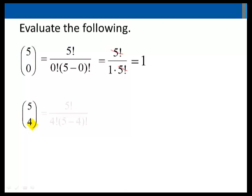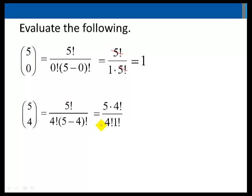5 choose 4 equals 5 factorial over 4 factorial times 5 minus 4 factorial. 5 factorial is 5 times 4 factorial, so this simplifies to 5 over 1, which is equal to 5.